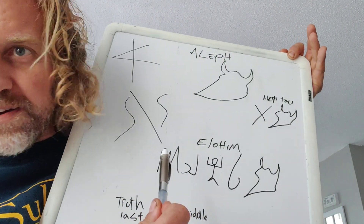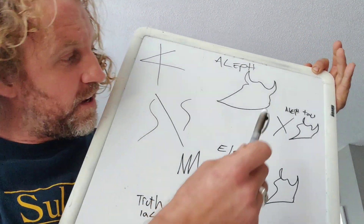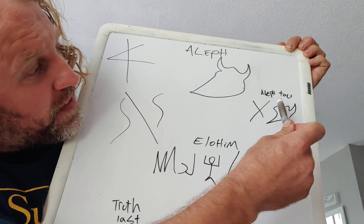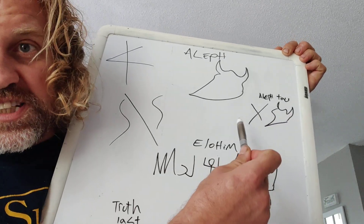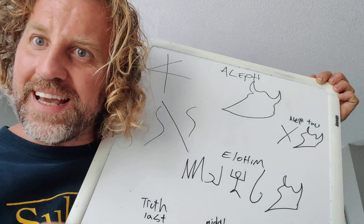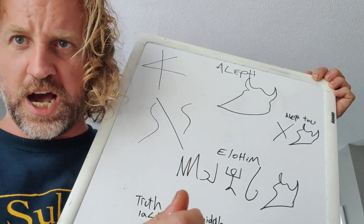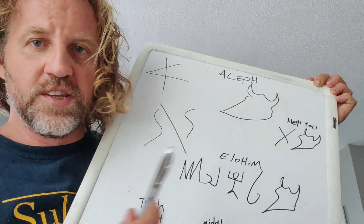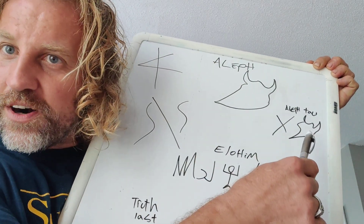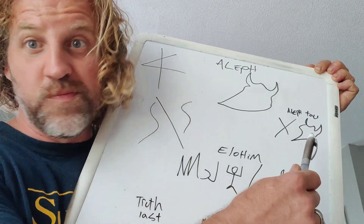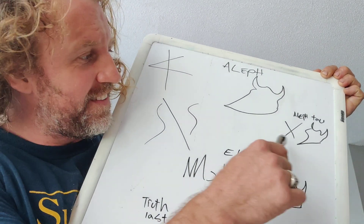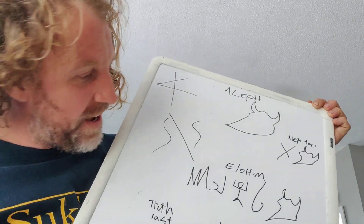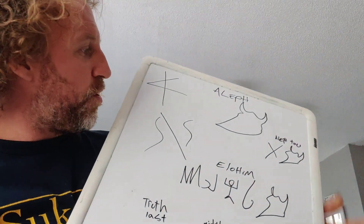Right next to it is used the Aleph-Tav. And we know the Messiah says, 'I am the Aleph and the Tav.' It's the beginning letter and the last letter of the Hebrew Aleph-Bet. How incredible.